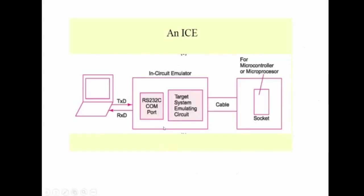The in-circuit emulator interfaces between the host system and the target system. The in-circuit emulator is connected to the host system through RS-232C — the Recommended Standard serial cable. Two lines are used for data transfer: TXD and RXD. Through the TXD line, the in-circuit emulator can receive data, and through the RXD line, the in-circuit emulator can send data to the host system.